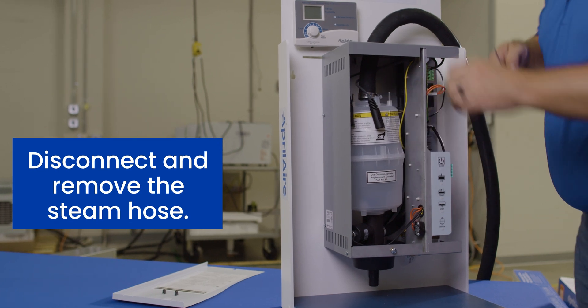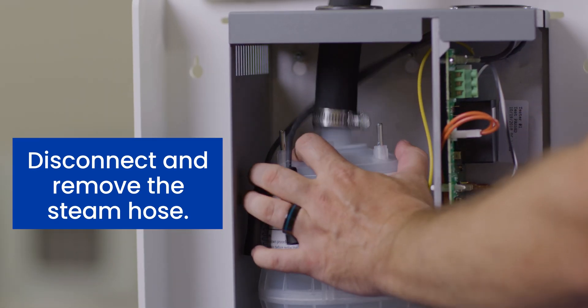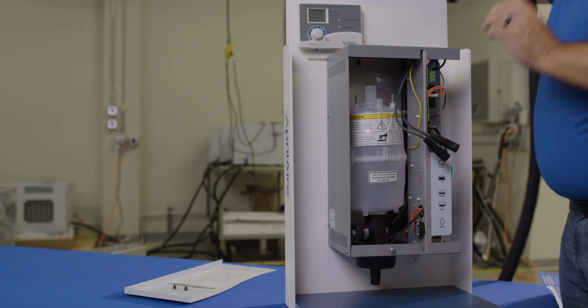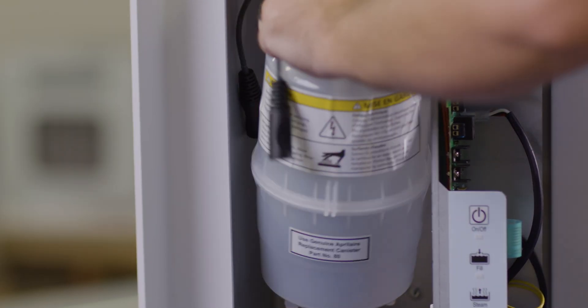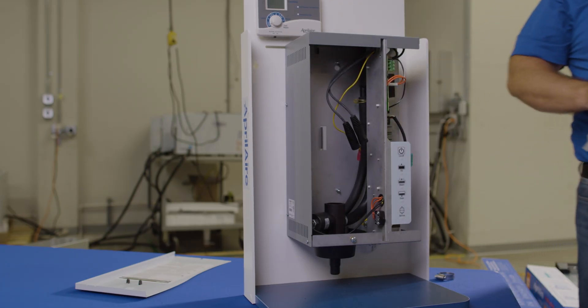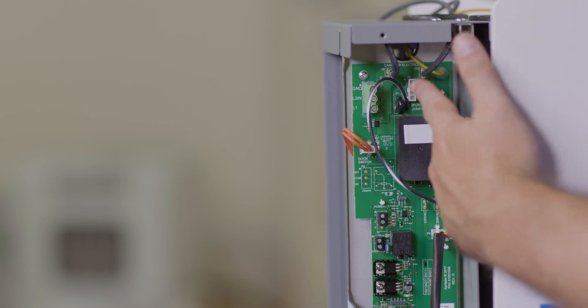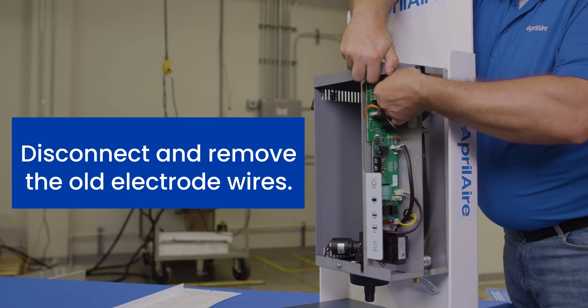Loosen the hose clamp at the top of the canister and slide the steam hose off. With everything disconnected, you can now remove and discard the old canister. Disconnect the electrode wires from the printed circuit board and then discard them.